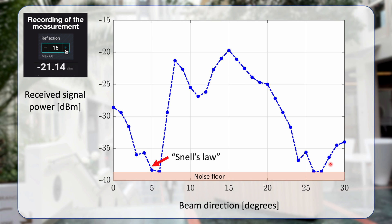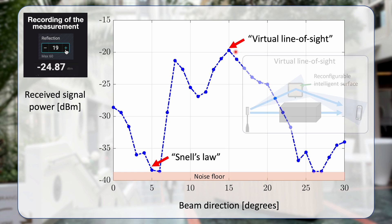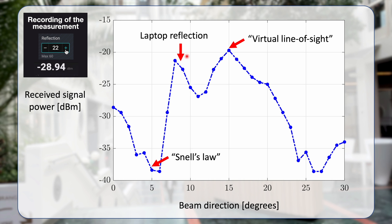So what we noticed is that a reflection according to Snell's law at plus 5 degrees will miss the receiver entirely. If we are reflecting exactly towards it, we can create a virtual line of sight path where the signal is going through the RIS to the receiver as if it was in line of sight, but it's actually a bended path through the RIS. And this peak was due to the reflection on the laptop controlling the receiver.